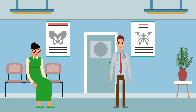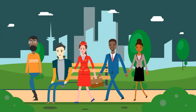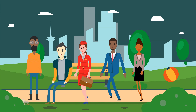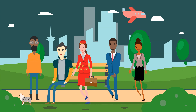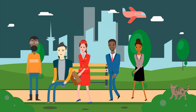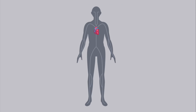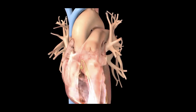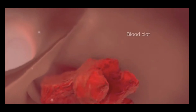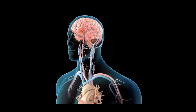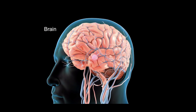Some people live for years with atrial fibrillation without problems. However, AFib can lead to future problems. Because the atria are beating rapidly and irregularly, blood does not flow through them as quickly, making it more likely to clot. If a clot is pumped out of the heart, it can travel to the brain, resulting in a stroke, or to the lungs, causing a pulmonary embolism.